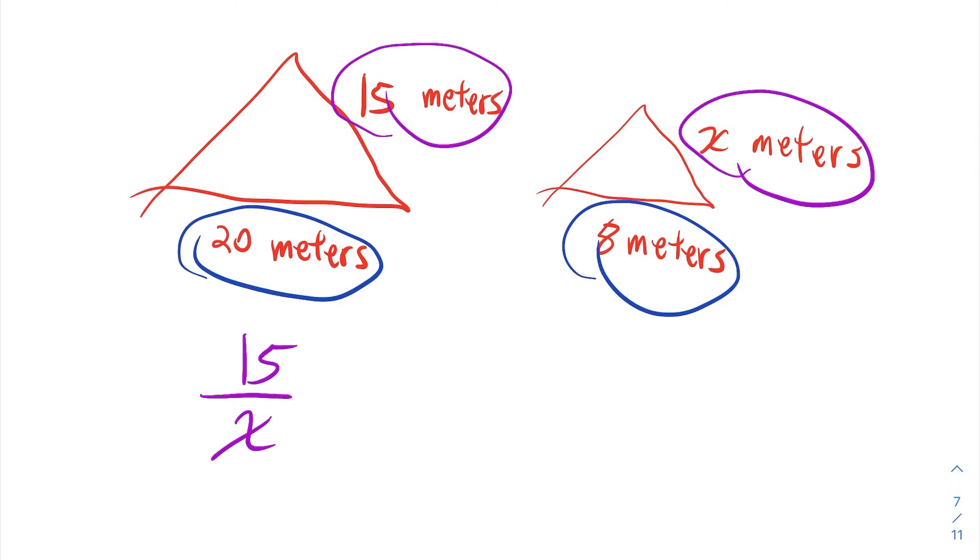I just have to make sure that those ratios are from the big triangles to the little triangles. 15 to X, big to little. 20 to 8, big to little. And then I just solve this proportion.